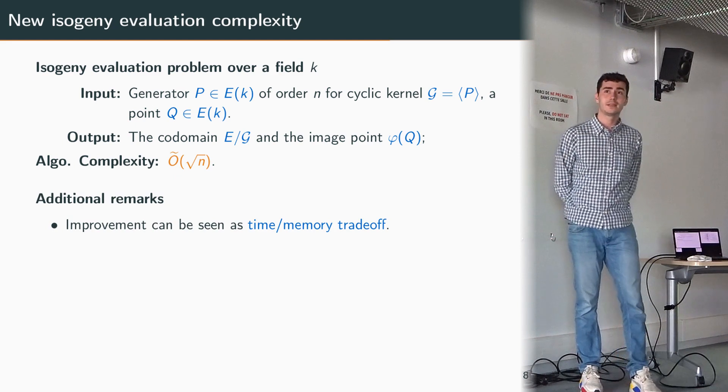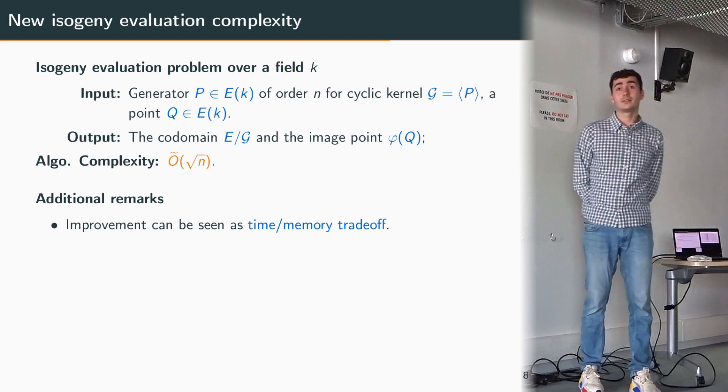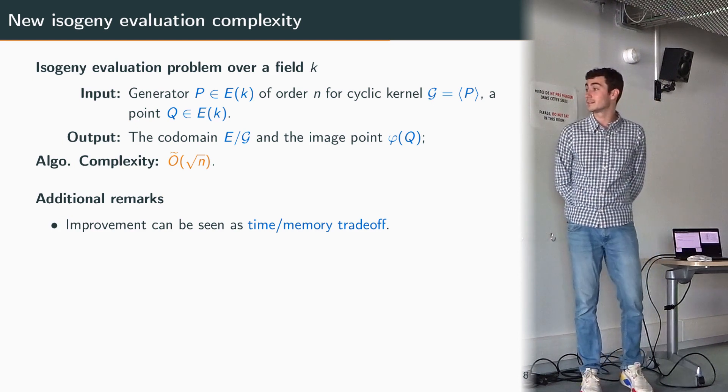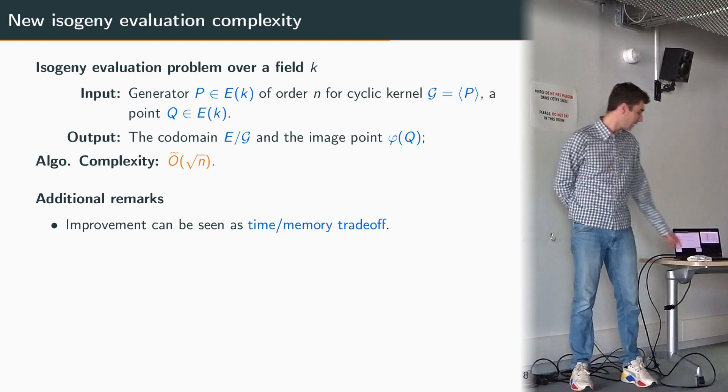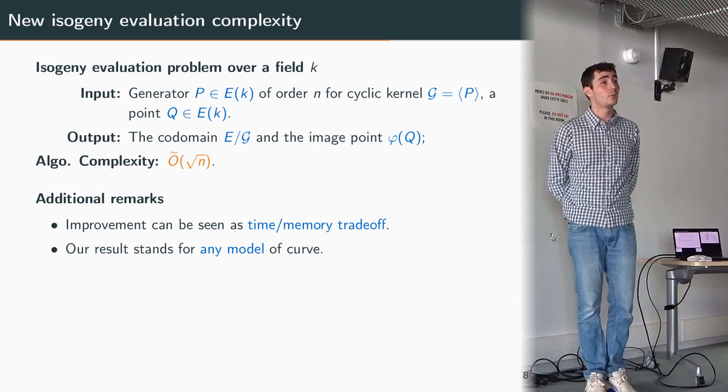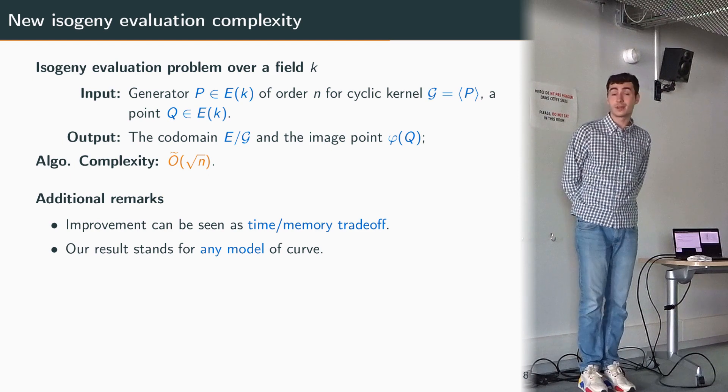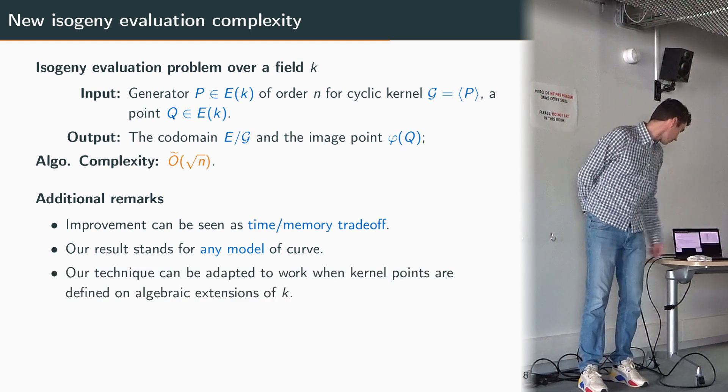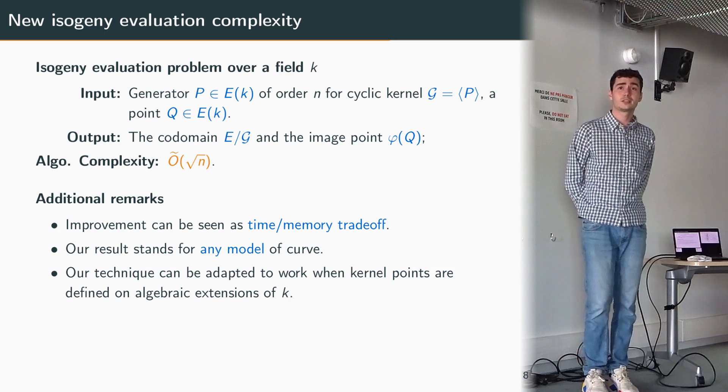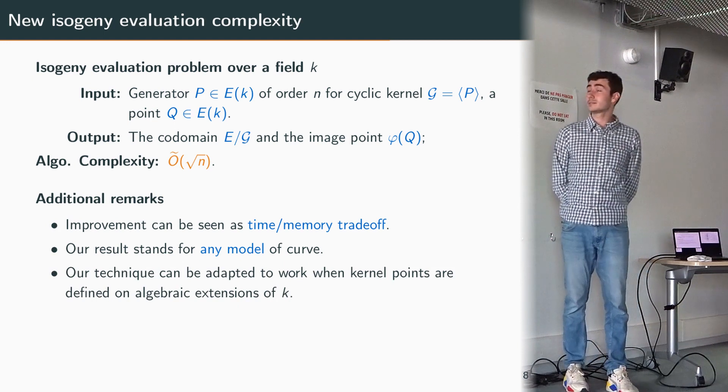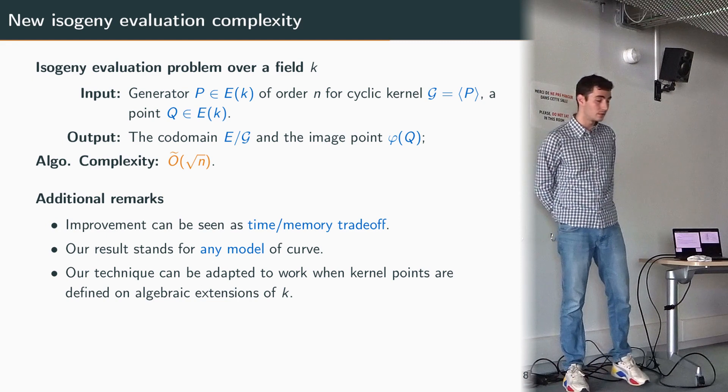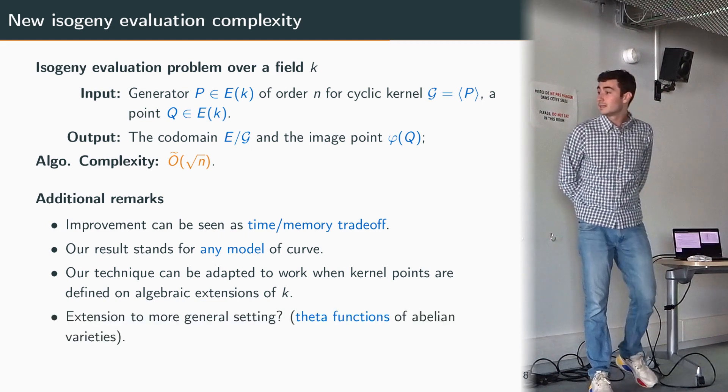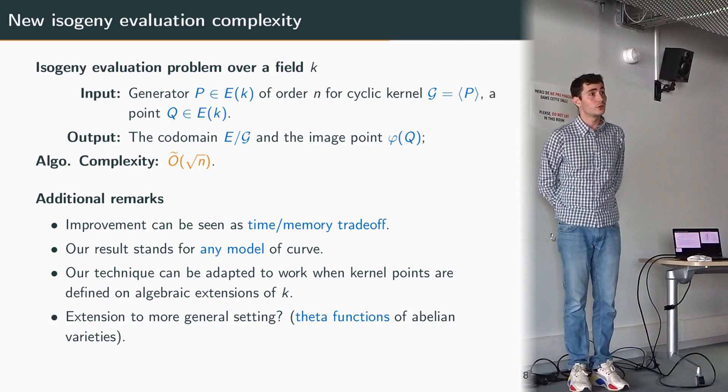I'd like to conclude this part with a few remarks. First, this improvement can actually be seen as some kind of time-memory trade-off. It may not be clear right now but in fact the efficient resultant algorithms that we use are relying on some kind of remainder tree structure that requires some memory to be computed. I've only been talking about Montgomery curves but in fact our result stands for any model of curves. The formula might be a bit different but in a sense it works in the same way. Also our technique can be adapted to the case where the kernel generator is defined on an algebraic extension of the field.